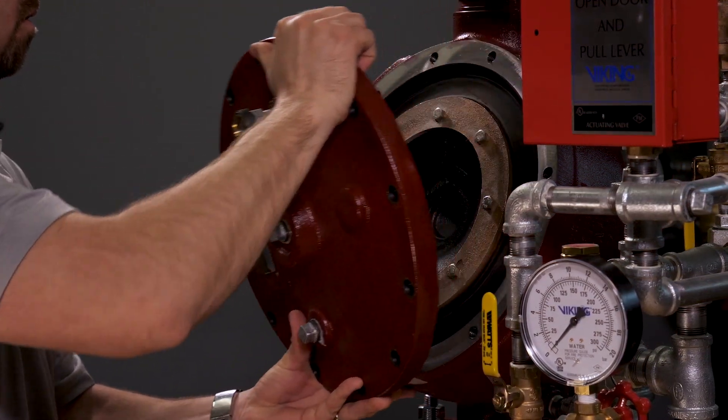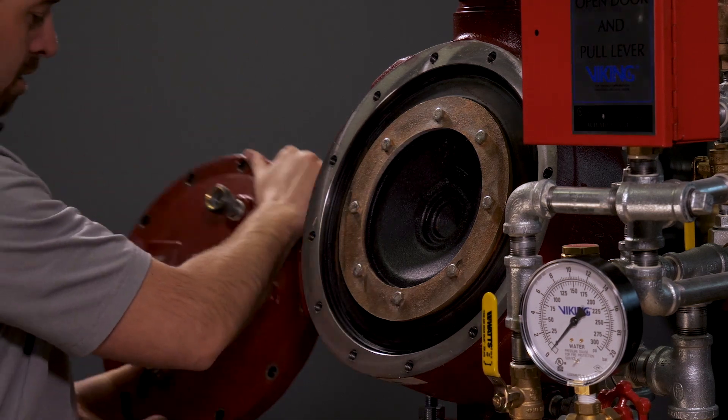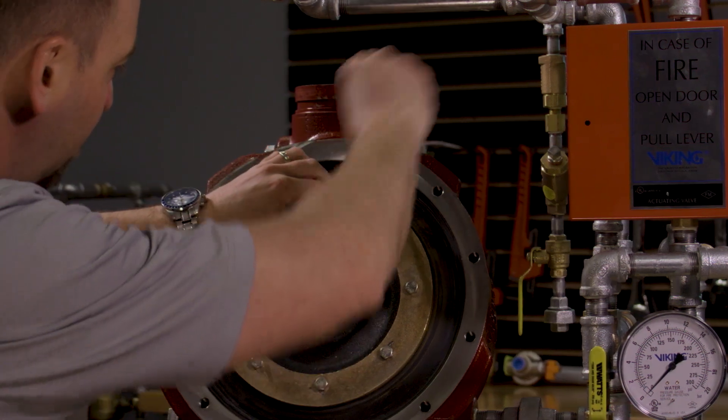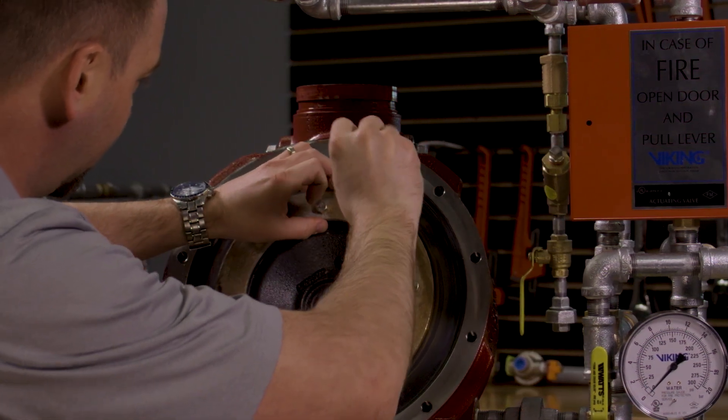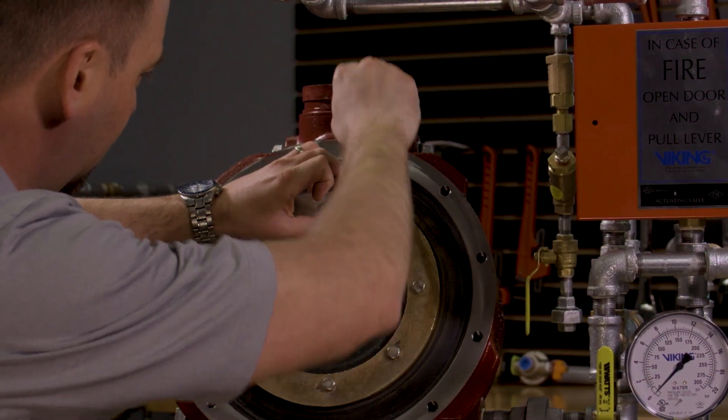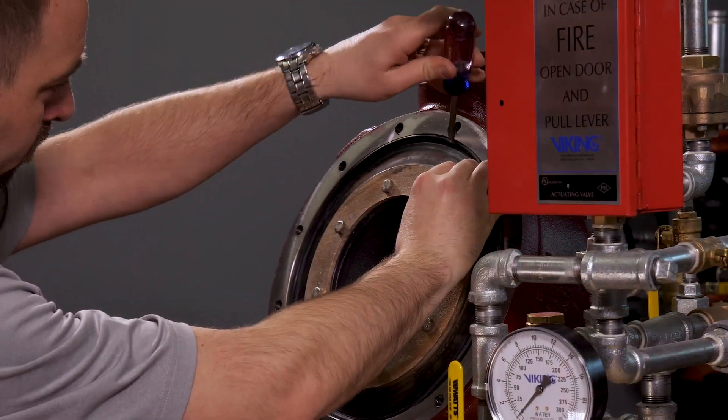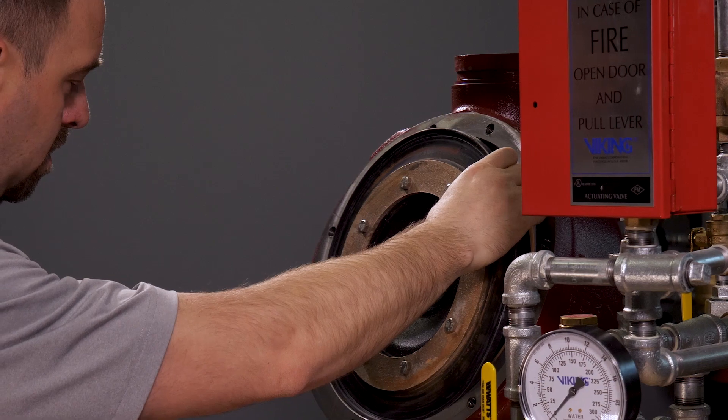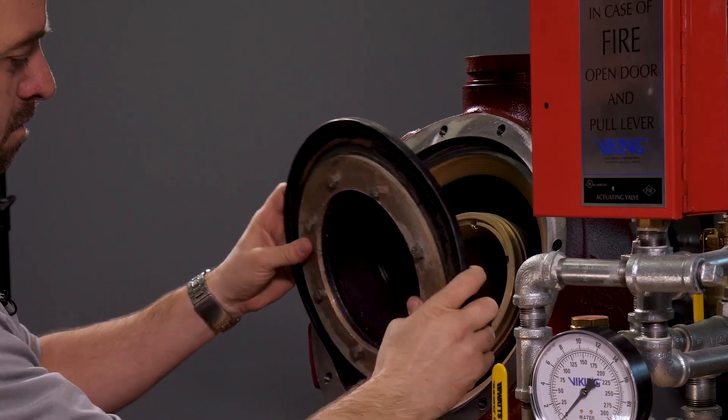The clapper assembly is not bolted or screwed down into the valve and is assembled as a single part. To remove the clapper assembly, you will need to gently place a flathead screwdriver in between the body and the upper diaphragm. This will allow you to remove the clapper assembly.